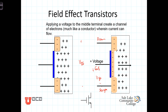The symbol for the field effect transistor shows the channel that can be controlled by the voltage on the gate. The terminals are known as the drain, the gate, and the source. The arrow will always be on the source, pointing in the direction of conventional current flow.